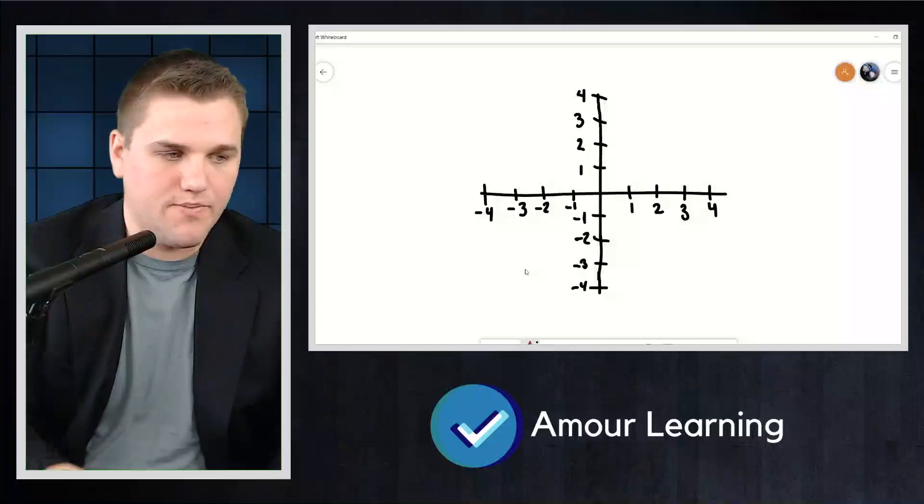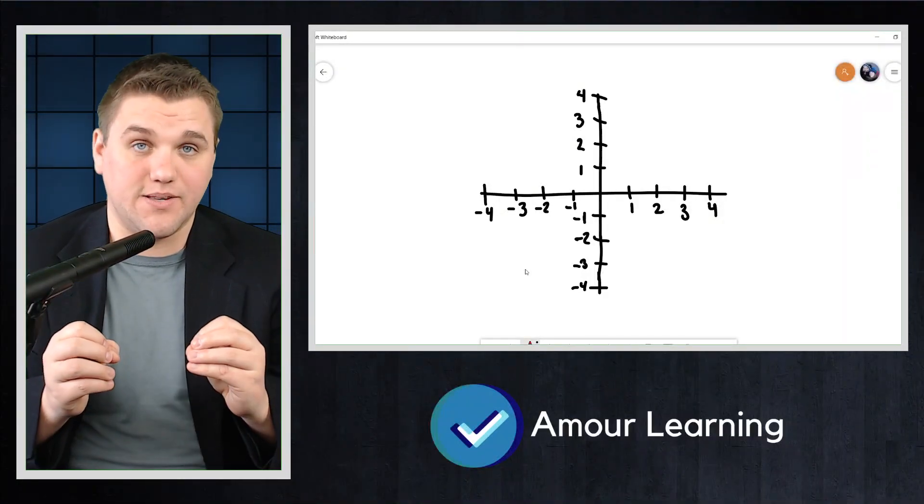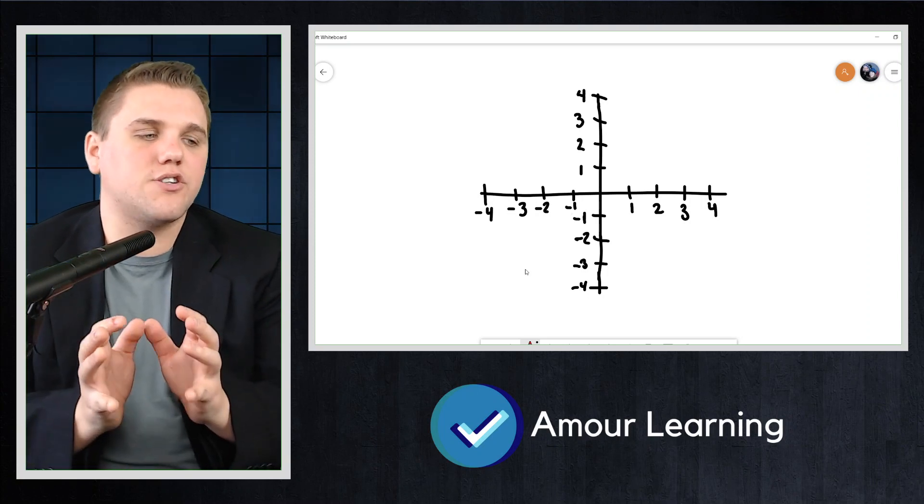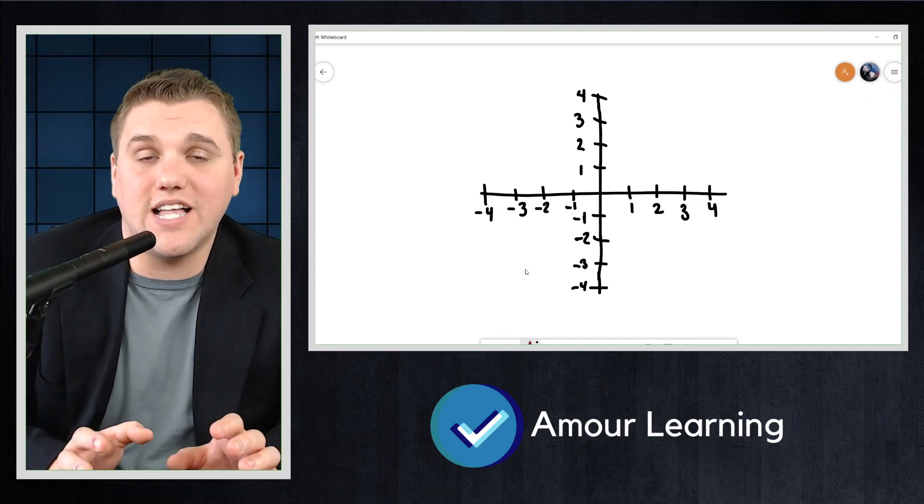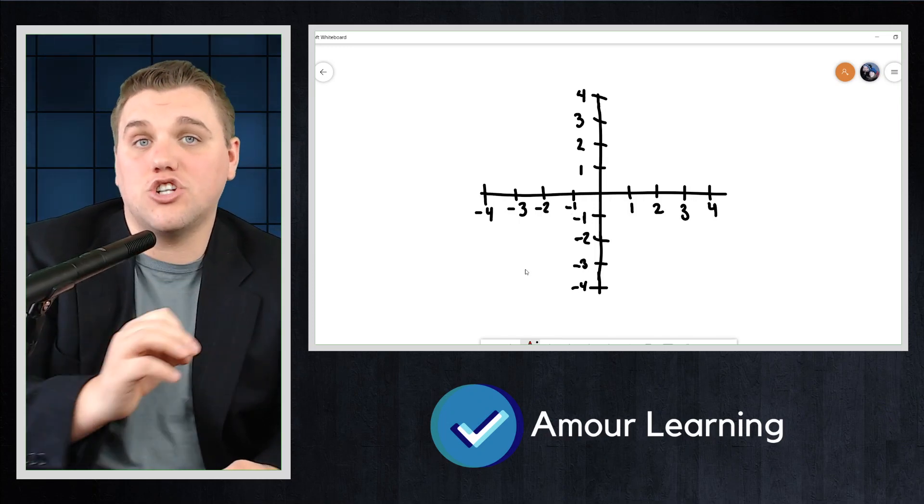So let's first draw out a coordinate plane and then we can look at some examples. So here's a coordinate plane. Let's take a look at where the lattice is. Now the lattice differs slightly from the coordinate plane in the sense that we're only looking at the coordinates here that have integer values.